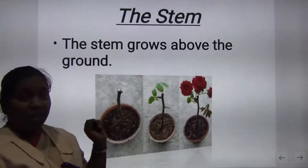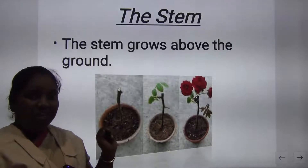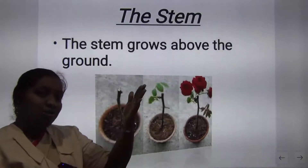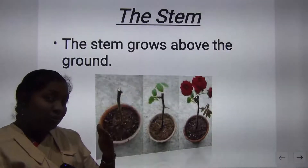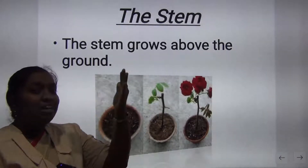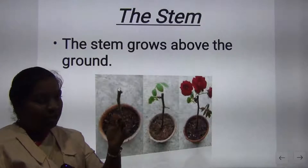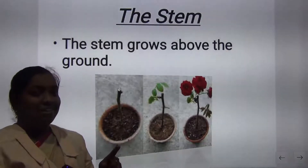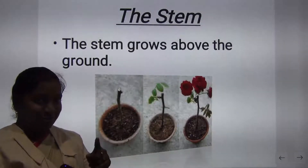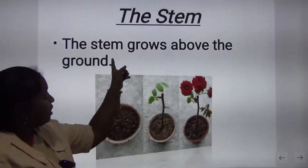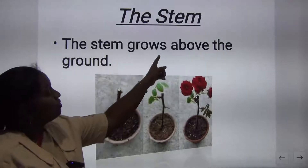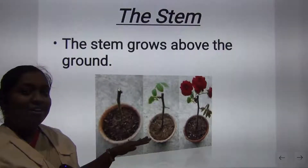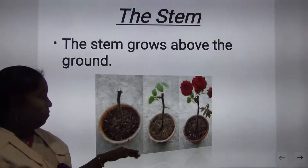Where does the stem grow? It will grow above the ground. Which part grows below the ground? That is the root. Very good, children — the stem grows above the ground.